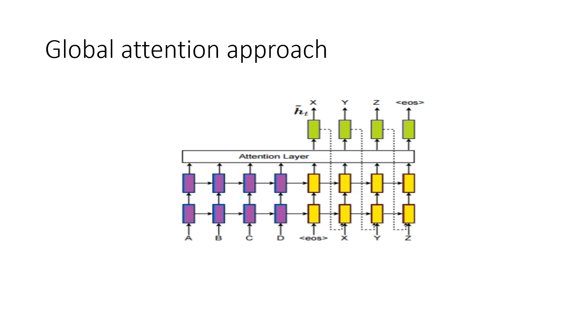In our project, we are also using a global attention-based approach where in the figure you can see that the hidden states, the source hidden states is compared with the target hidden states, individual target hidden states, to produce an alignment vector. This alignment vector is used to calculate the context vector. And this context vector can be used to derive the attentional vector.